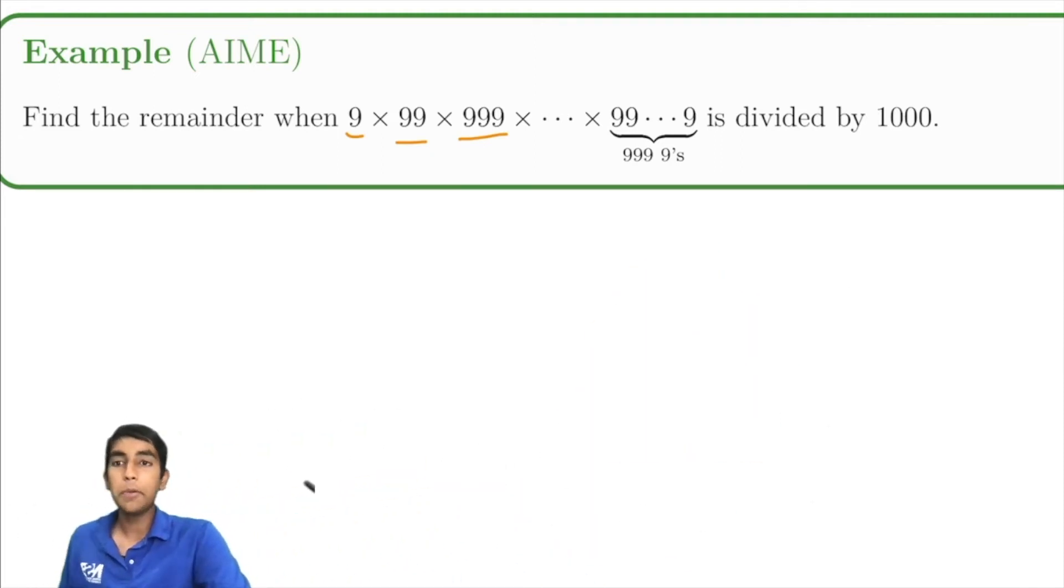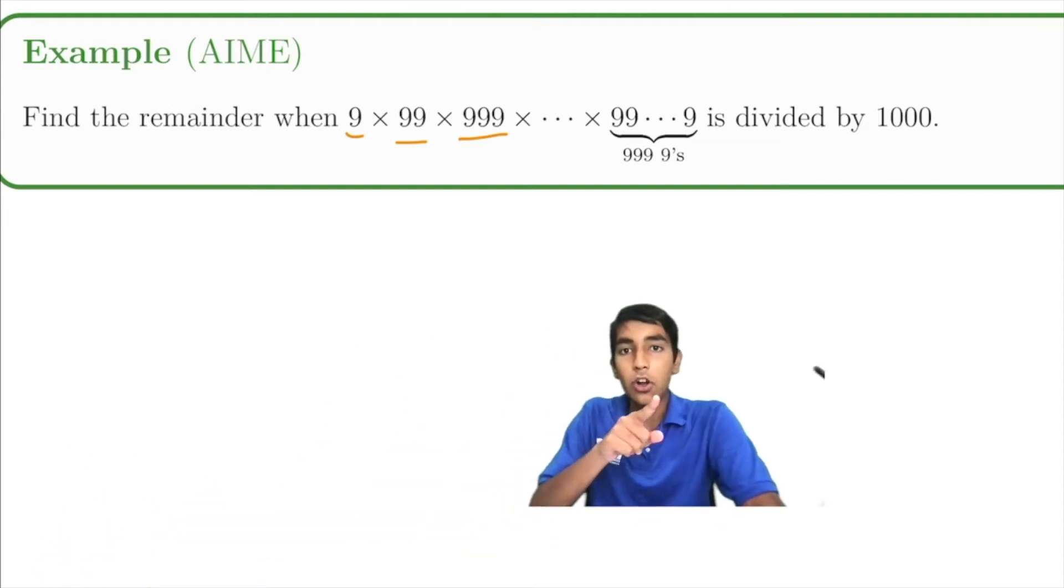There's absolutely no way we're multiplying this thing out. It's probably going to take you till next year to do that. So is there anything faster and smarter we can do? Of course there is.